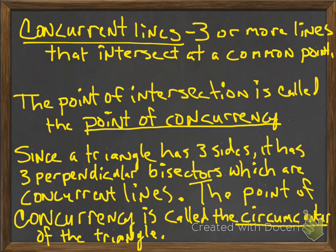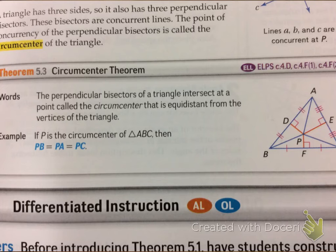All right, so next thing. Let's talk about concurrent lines. Concurrent lines are three or more lines that intersect at a common point. That common point is called a point of concurrency. Since a triangle has three sides, it has three perpendicular bisectors, which are concurrent lines. A triangle has three sides, it has three perpendicular bisectors, which are concurrent lines. The point of concurrency on a triangle is called a circumcenter. Now, every triangle has a circumcenter, and there is a theorem that goes with that. Perpendicular bisectors of a triangle intersect at a point that's called a circumcenter, that is equal distance from the vertices of the triangle.